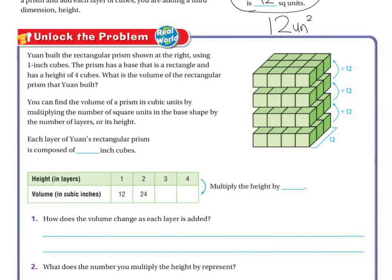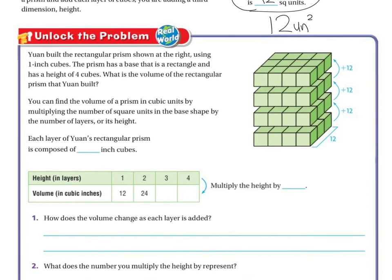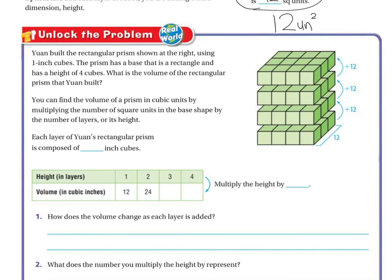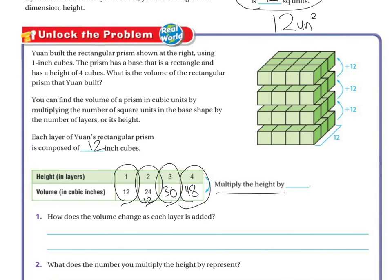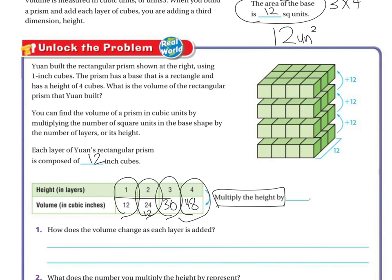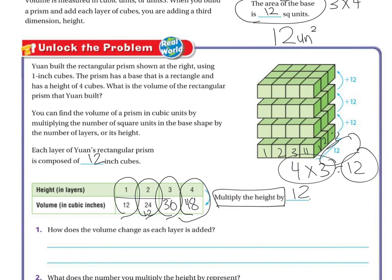Each of these layers has 12 units. There are 1, 2, 3, 4 layers. Since each layer is composed of 12 unit cubes, the first layer has 12, adding the second gives 24, the third gives 36, and the fourth gives 48. So I multiply the height by 12: 4 times 3 gave us 12, and then 12 times the height of 4 gives us 48. So 12 times 4 is 48.